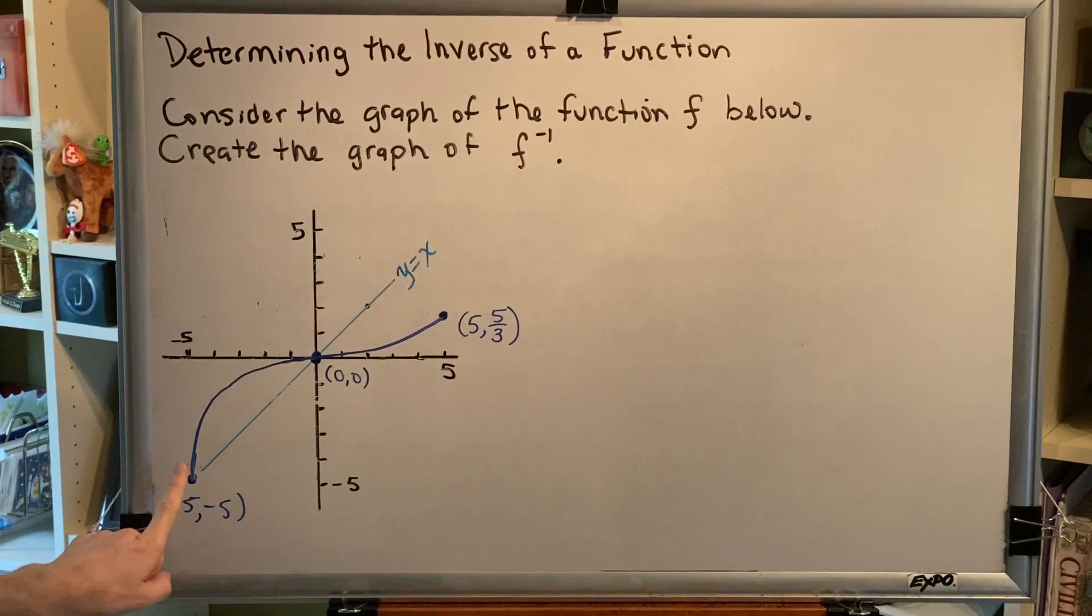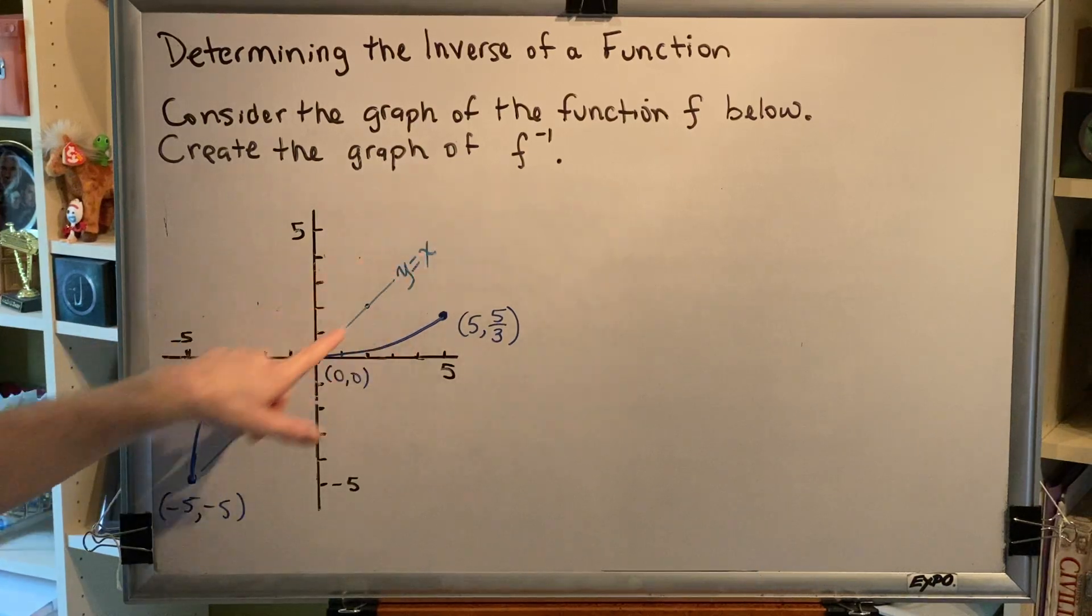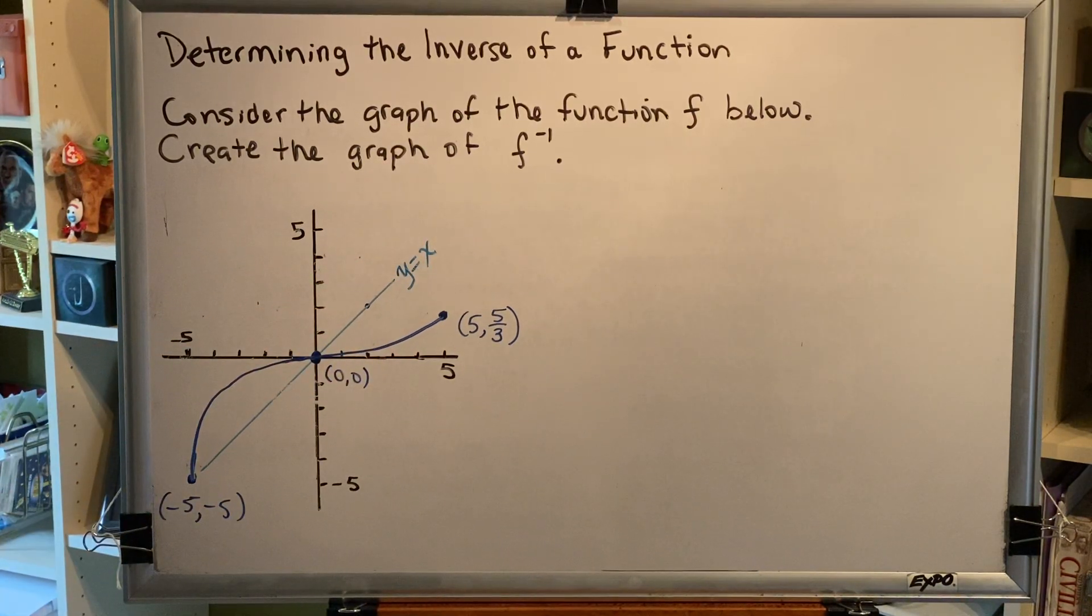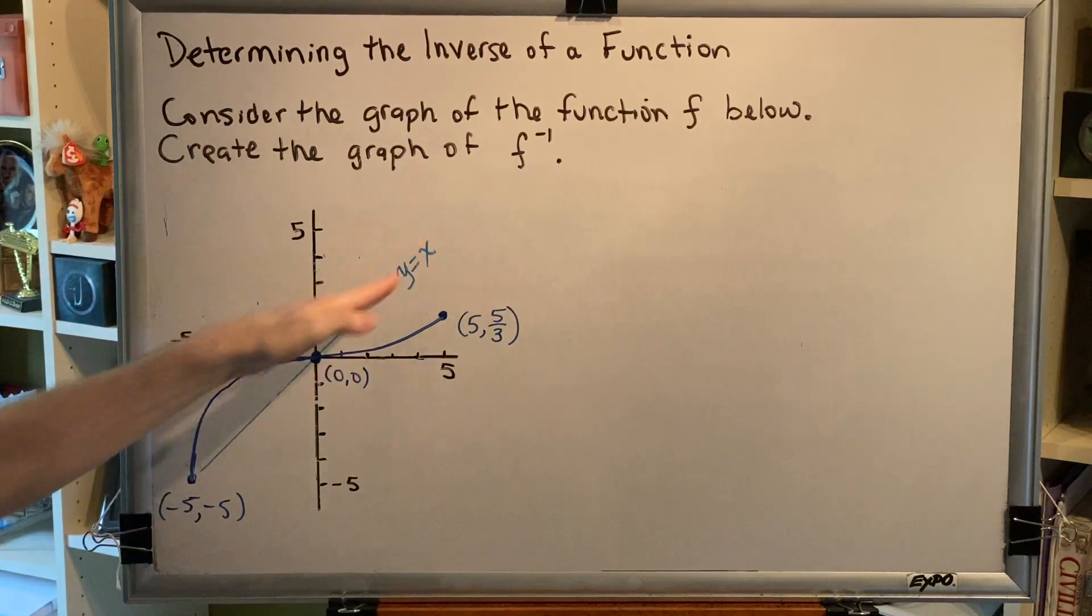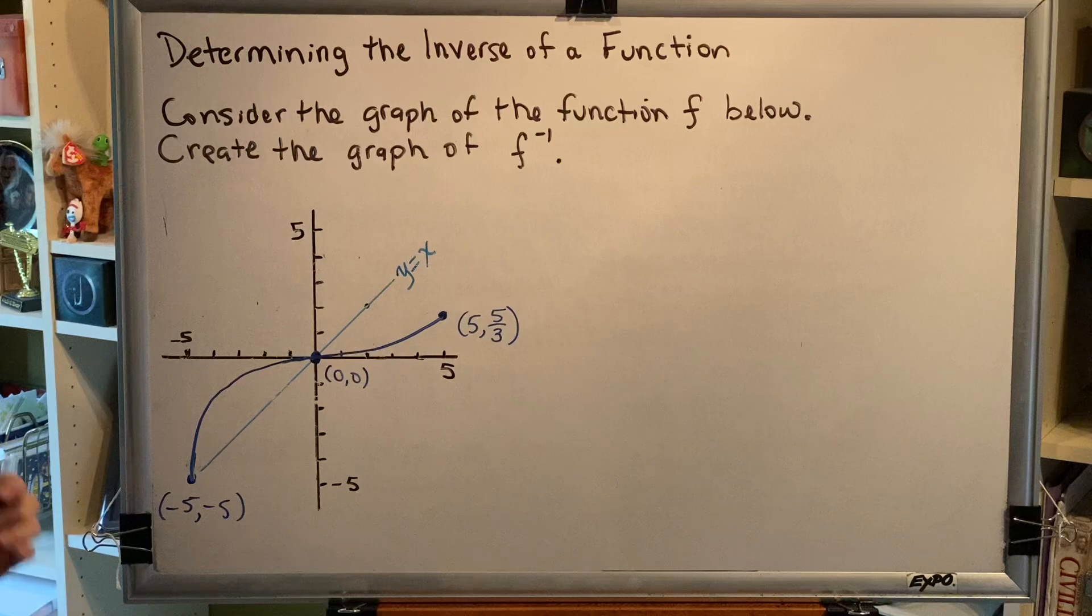So f is shown using this blue curve. The line y equals x, which is not part of our graph, is simply there to help us find the correct graph of f inverse. Y equals x is shown here as a light blue straight line with a slope of one through the origin. This is our identity function. Let's go ahead and go through the process of finding f inverse.